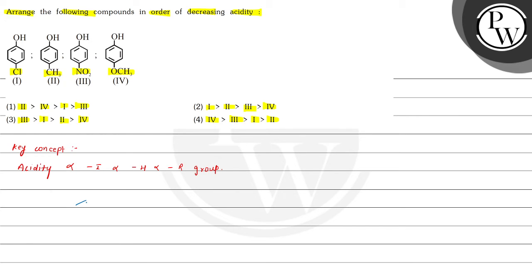Now we can see in these structures, the first has phenol with chlorine at the para position, the second has a methyl group attached at the para position, and in the third one, a nitro group is attached at the para position.